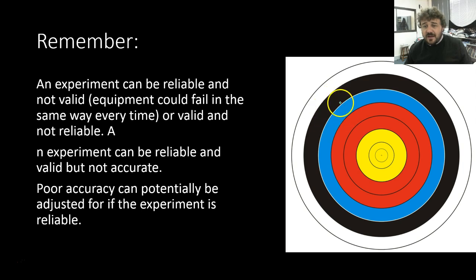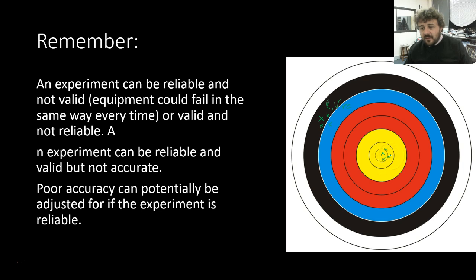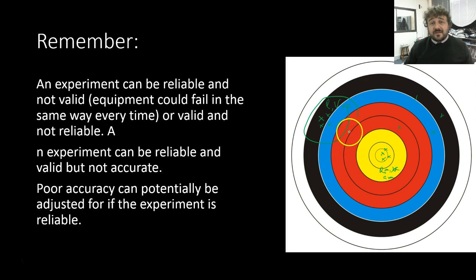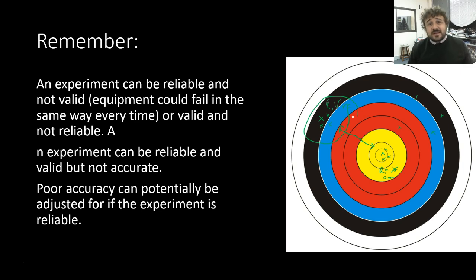Back to our archery competition: shots grouped in one area — that's reliable and valid, but not accurate. Then someone who's reliable, accurate, and precise, but she's using an axe — so it's not valid. Then another archer who's grouped consistently but off-target. The ideal situation is actually the reliable-but-off-target one, because we can correct for it in science — if we know our results are off by a certain amount, we can adjust. What we can't adjust for is reliability and validity.